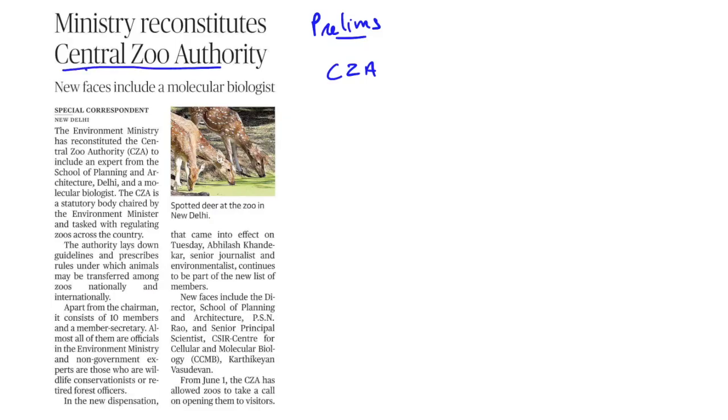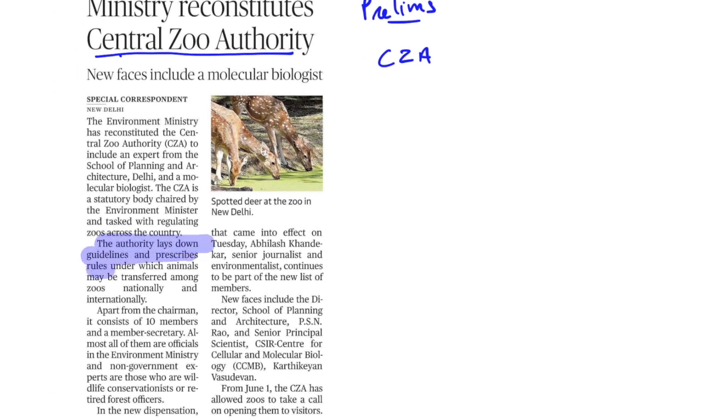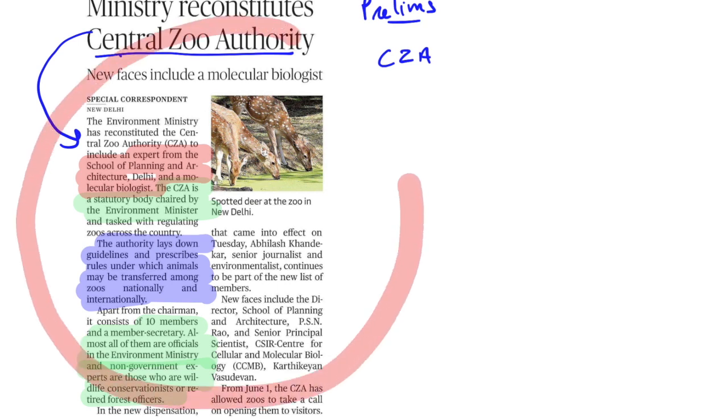Now here the Central Zoo Authority has been mentioned, which has been reconstituted. The question on the organizations have been asked in the prelims as a part of environment and ecology. The Central Zoo Authority, first of all, we'll look what it does. It lays the guideline with respect to the transfer of animals in the zoos throughout the country. And it is chaired by the Environment Minister and there are other members also, which includes the members from the Ministry of Environment and non-governmental experts who are the wildlife conservationists. It has been reconstituted and new members have been added. That is an expert from the School of Planning and Architecture and a molecular biologist. Though you don't need to remember them bit by bit, but just please keep in mind the areas from where the members are coming.